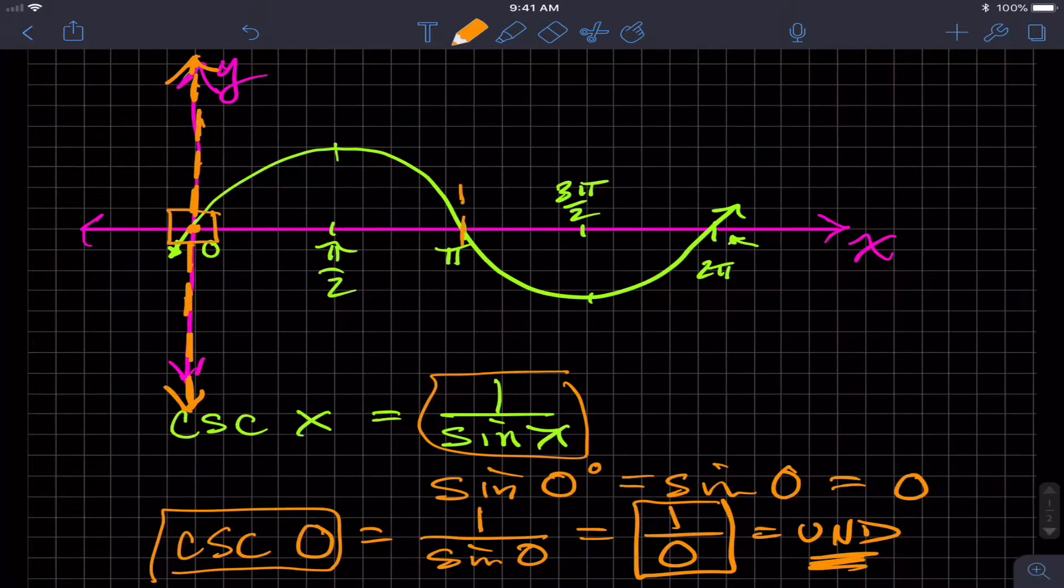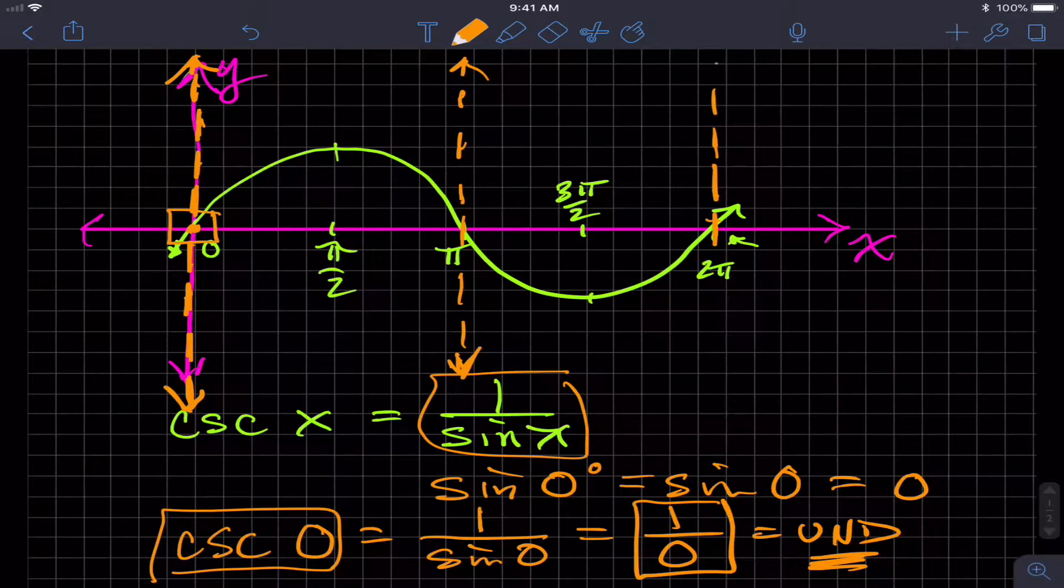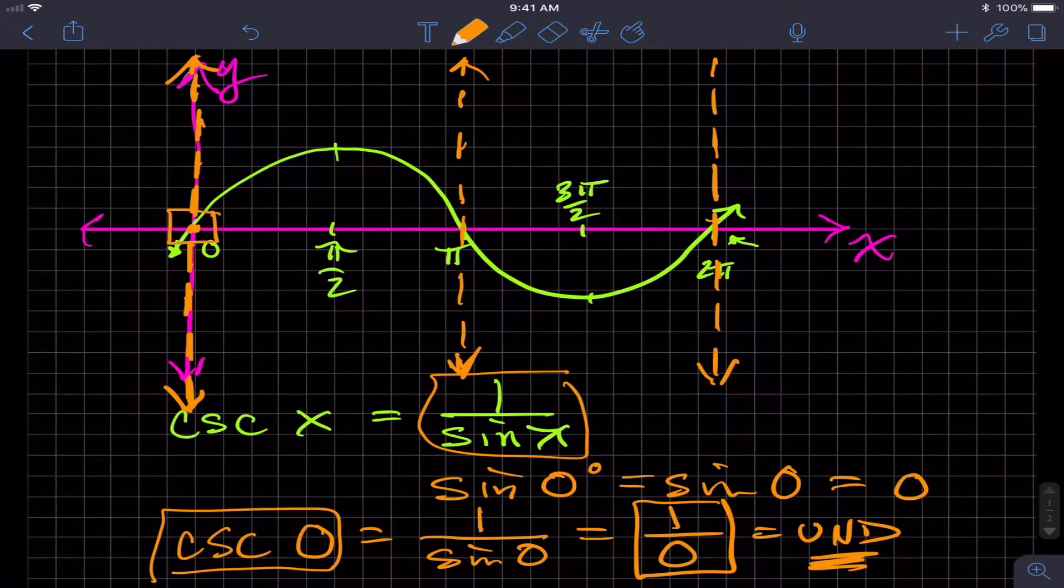And in fact, you get an asymptote at every value where sine was zero. So sine of zero at pi. So there's sine zero, but also cosecant undefined. Here's sine zero, cosecant undefined. So I have these asymptotes.